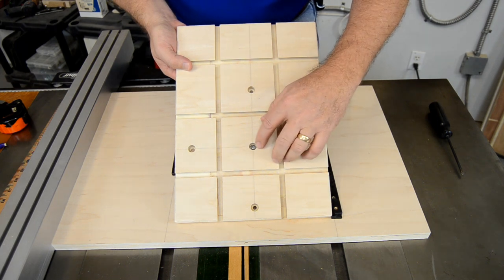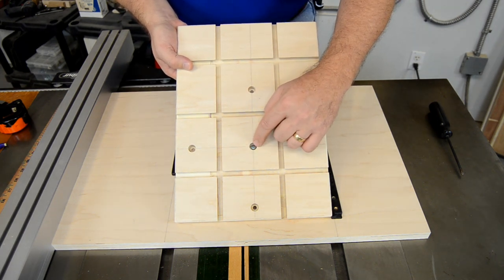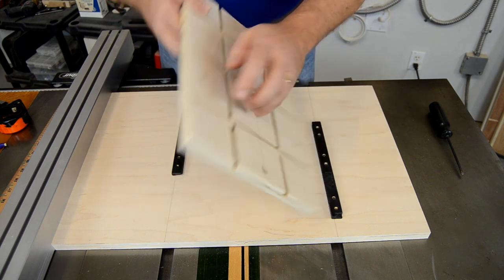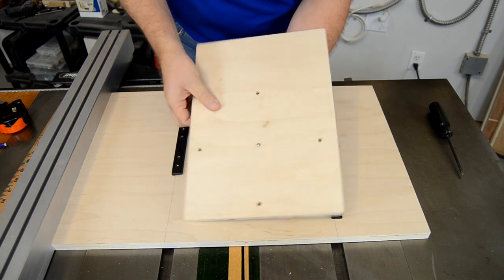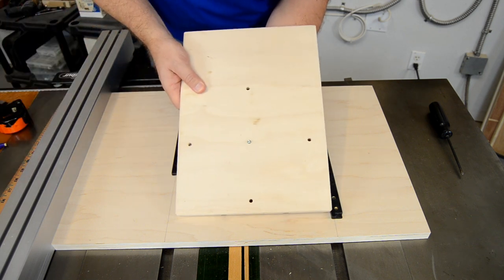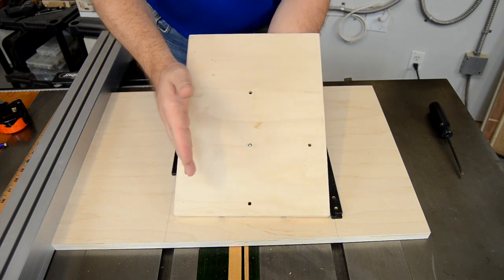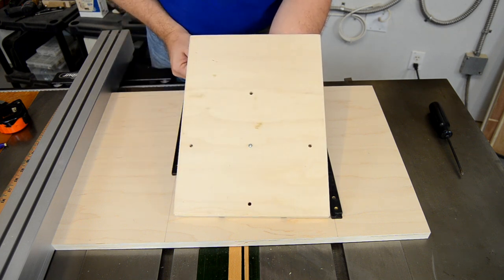We're going to create half-inch counter bores for the screw and the washer, and then quarter-inch through holes to finish off. What that gives us is about a thirty-second of play all the way around each of the screws. That's going to allow us to adjust everything in place.